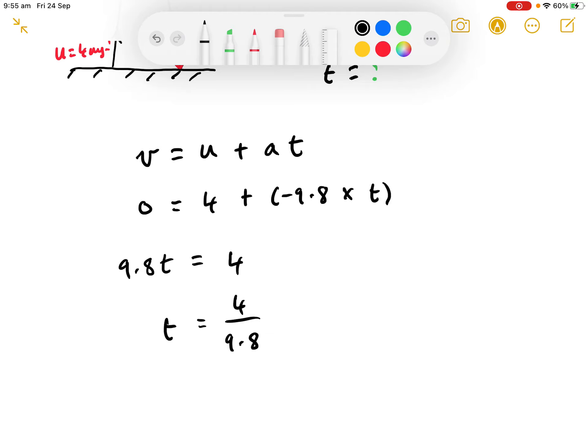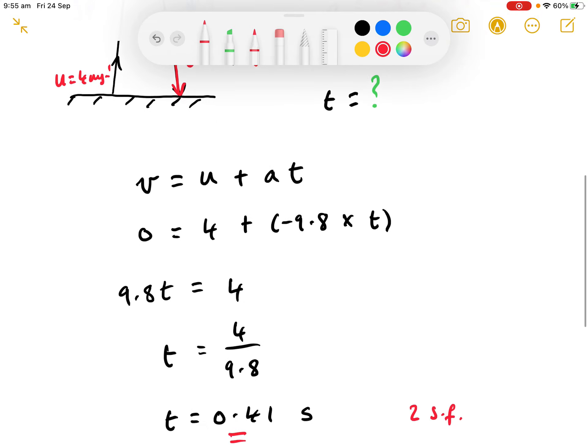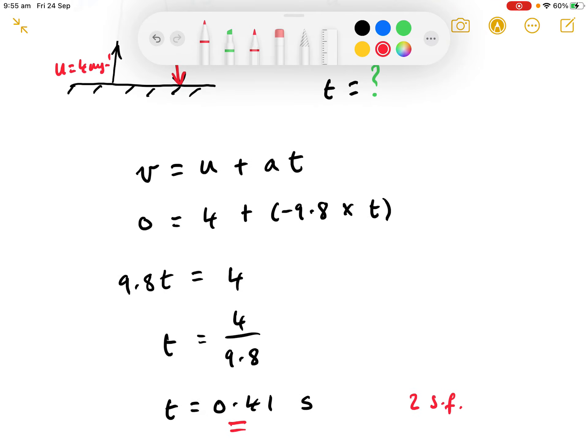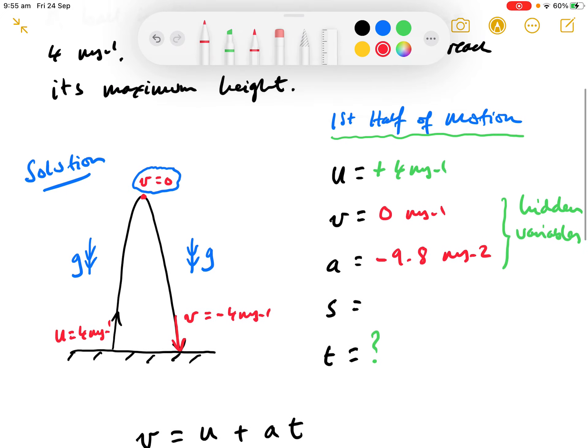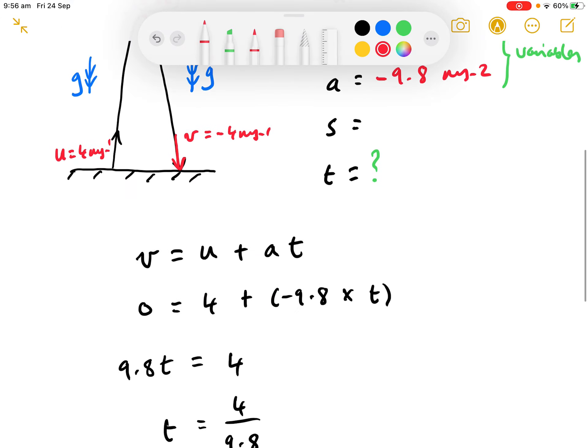And on your calculator, 4 divided by 9.8. And you'll get 0.41 seconds. I'm just going to two significant figures there. And that's your time of flight.